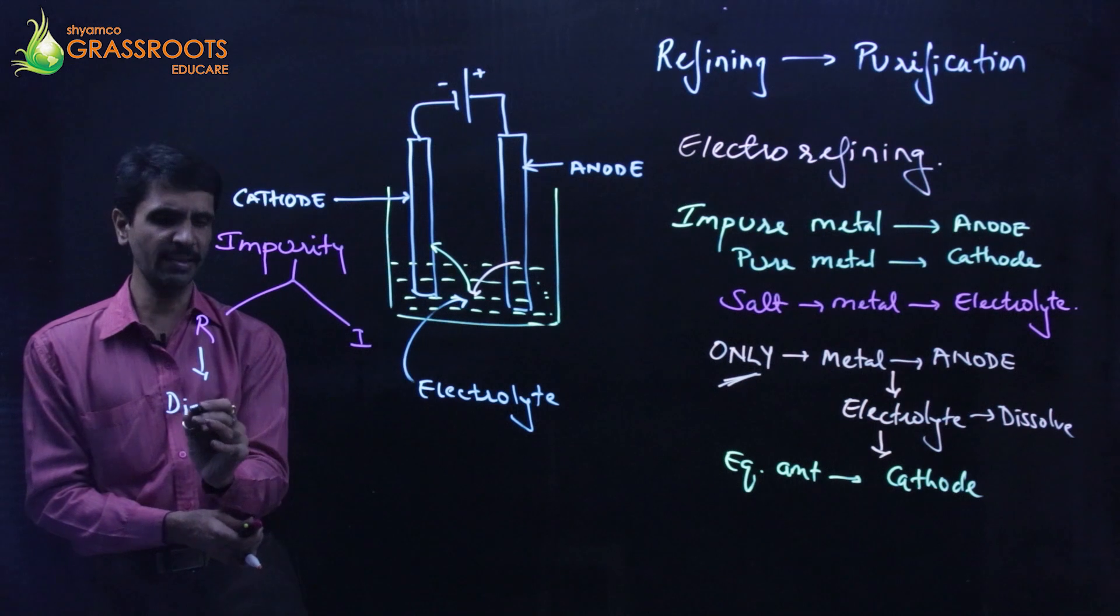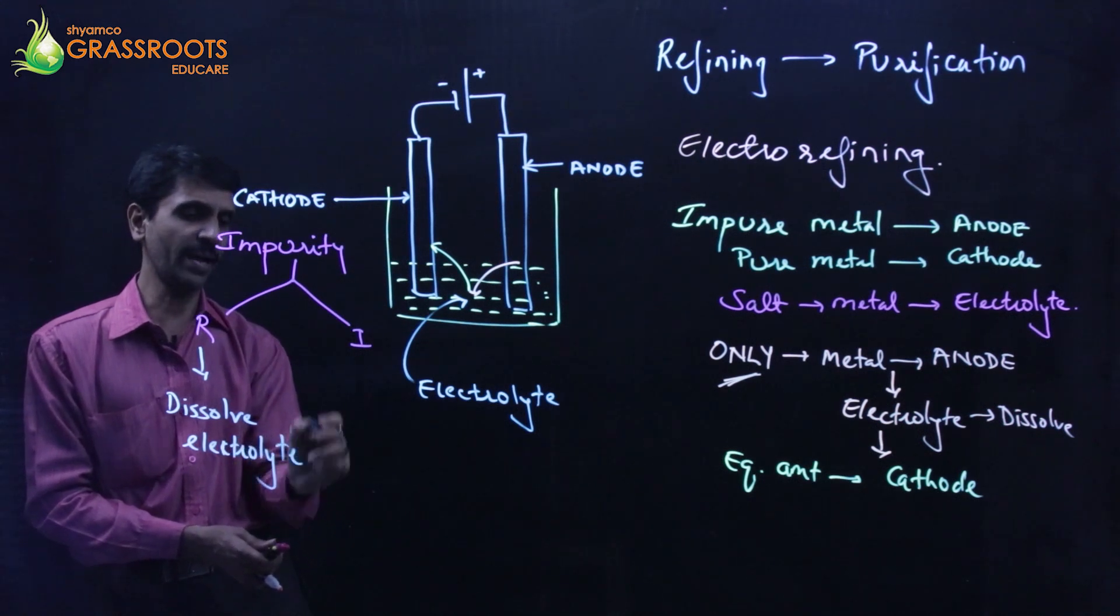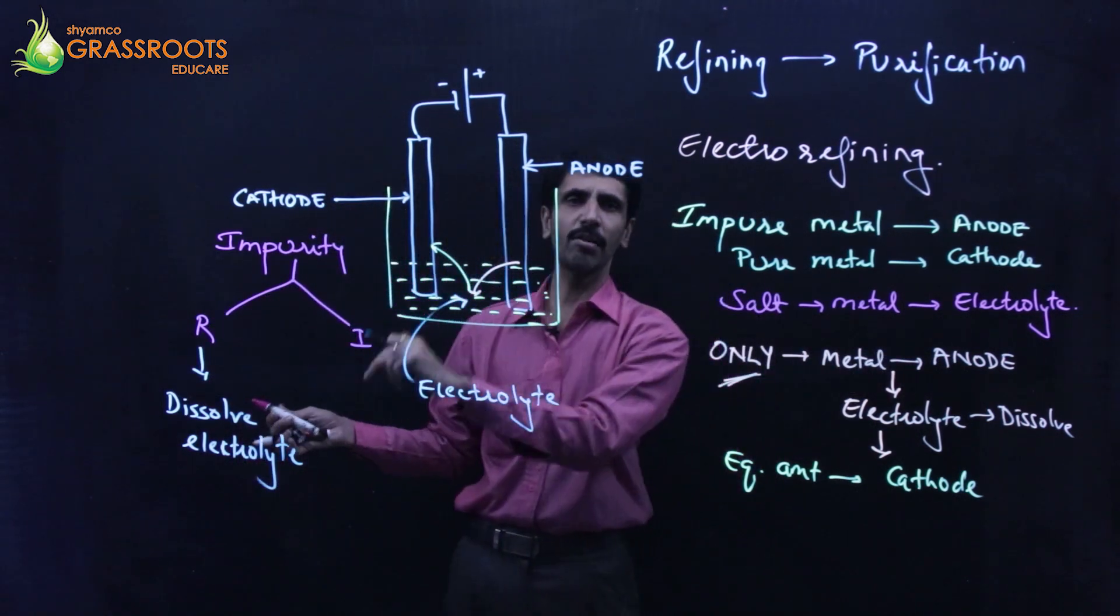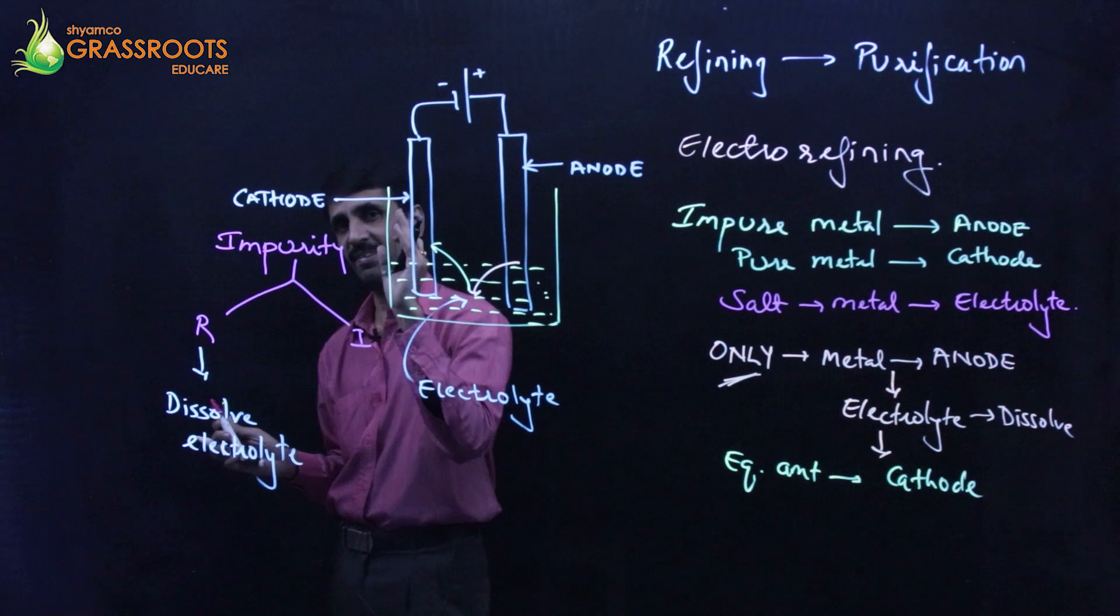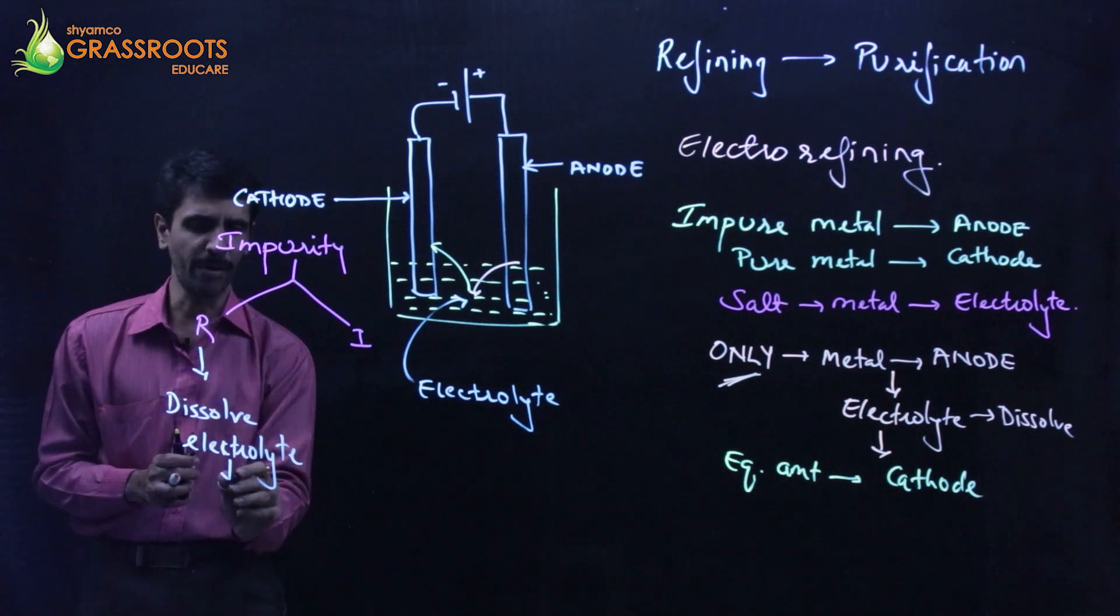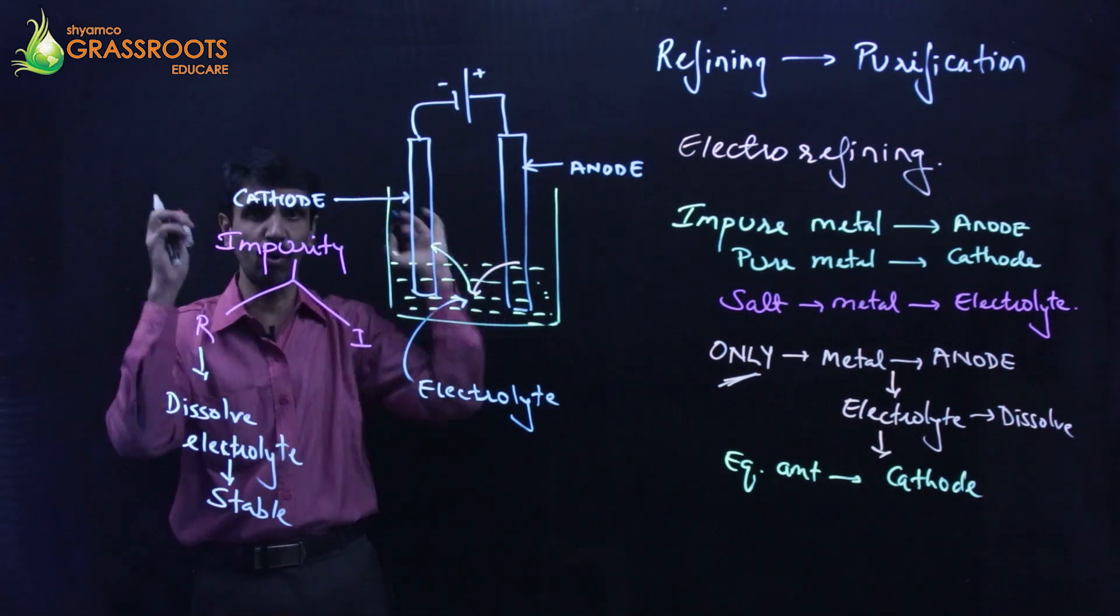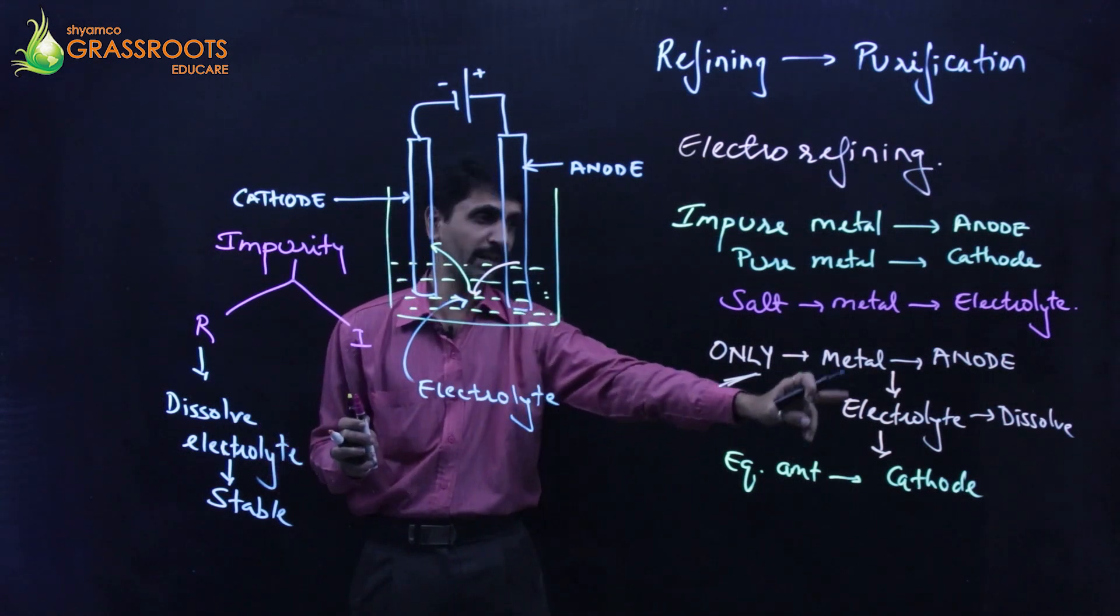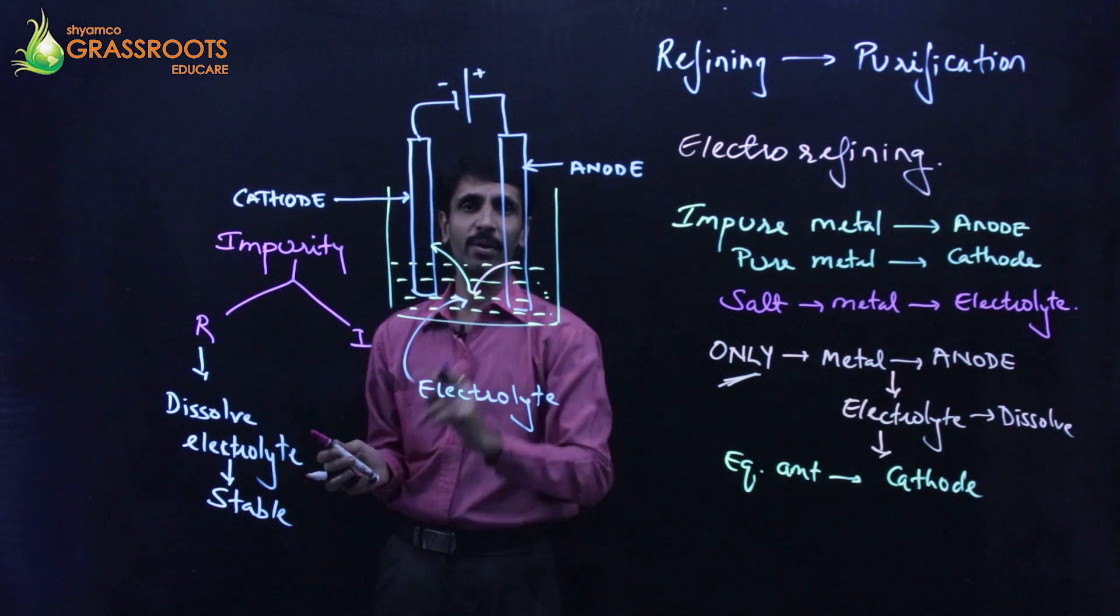Now if it is reactive, then what will happen is it is going to dissolve in the electrolyte. You will feel that here also the metal dissolves in the electrolyte, the impurity also dissolves in the electrolyte. Then what is the difference? Still the metal and impurity are together. No, it's not like that. The difference is when the reactive impurity dissolves in the electrolyte, it forms a stable compound. When it forms a stable compound, it has no energy. And when it has no energy, it will remain in the electrolyte only. Is the metal going to remain in the electrolyte? No. It's going to get dissolved but then equivalent amount is going to deposit at cathode.